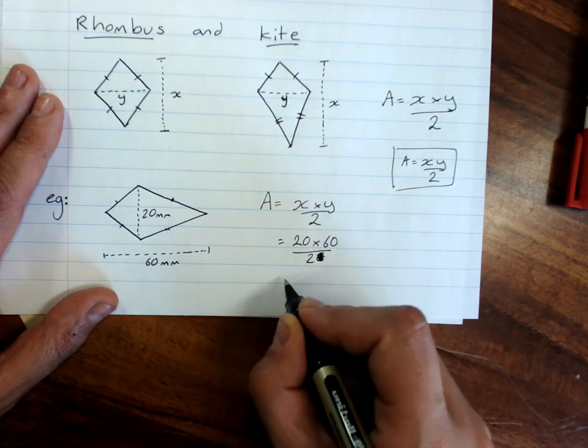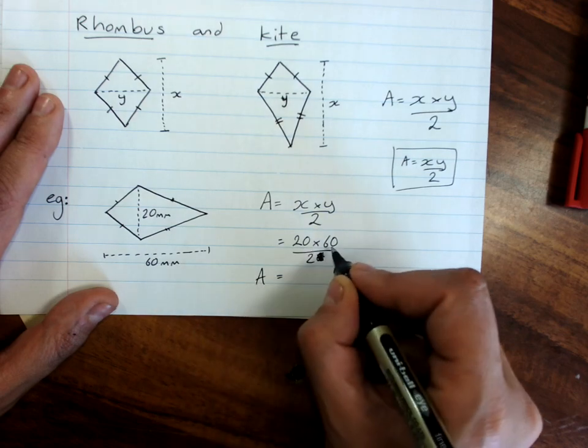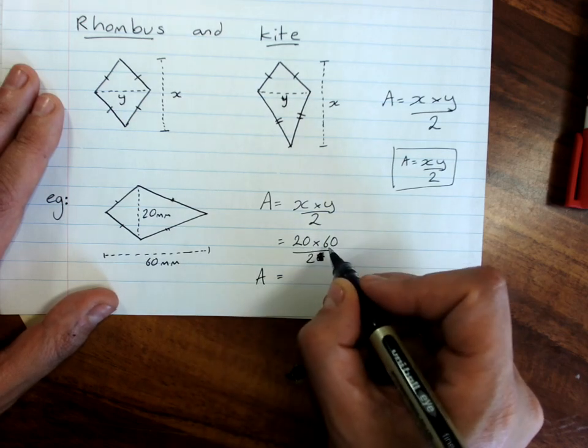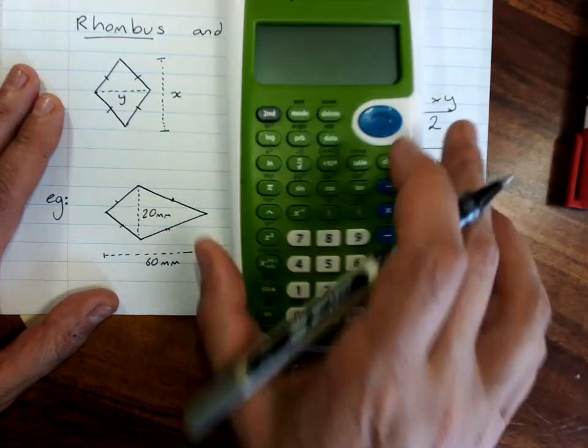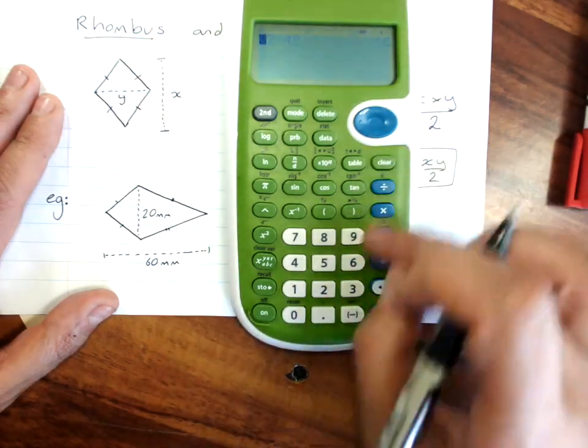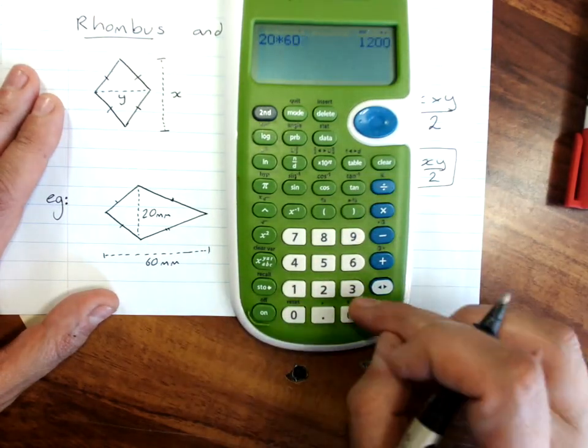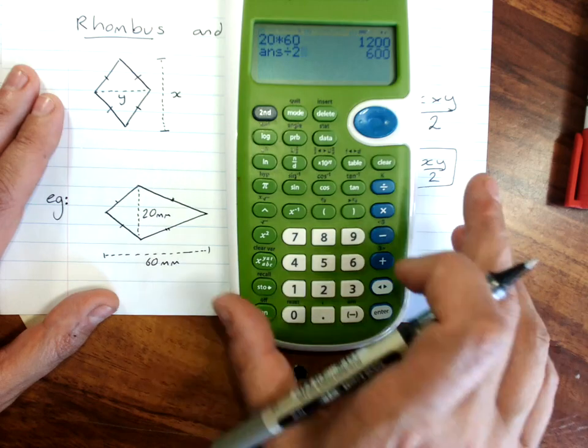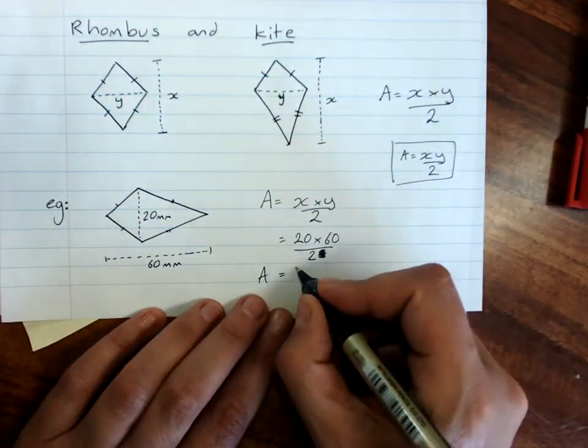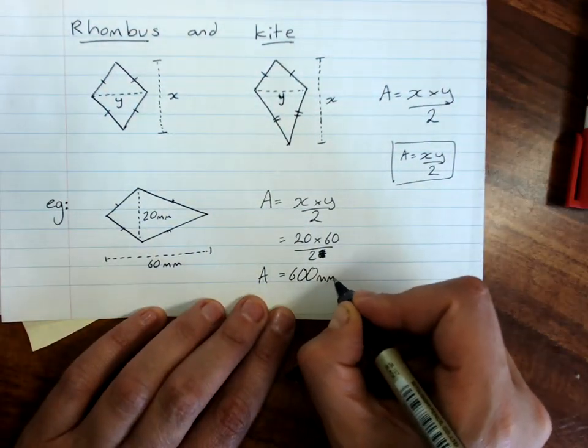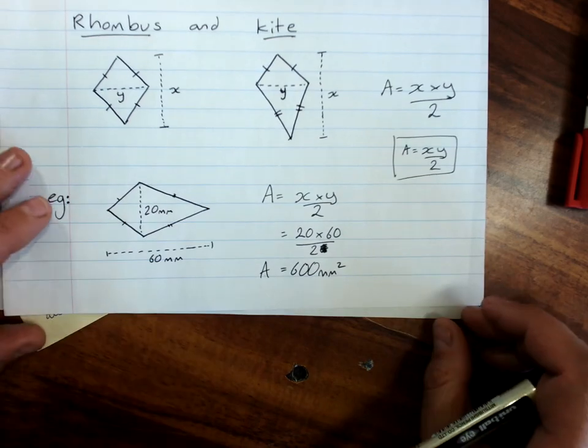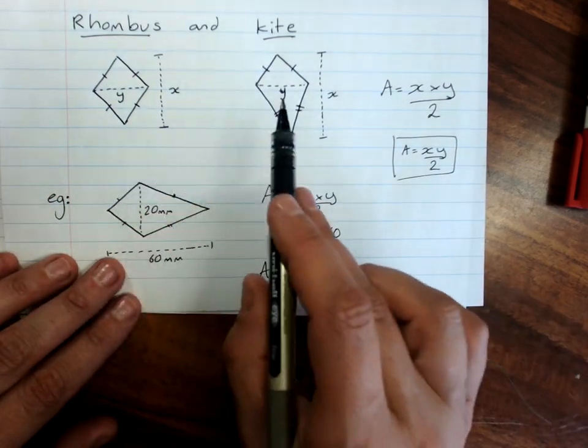20 times 60—get your calculator if you need it. 20 times 60, divide that by 2. I've got 600 millimeters squared. And that will work for either a rhombus or a kite.